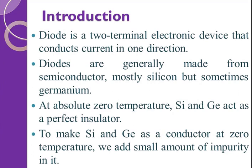At absolute zero temperature, silicon and germanium act as perfect insulators. So here we need to make silicon and germanium conduct at zero temperature, so we add some impurity. That's why these semiconductors are called extrinsic semiconductors.